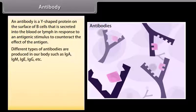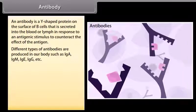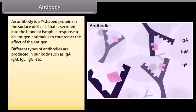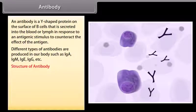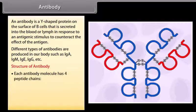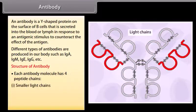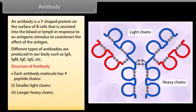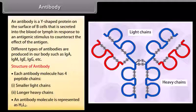Different types of antibodies are produced in our body, such as IgA, IgM, IgE, IgG, etc. Each antibody molecule has four peptide chains: smaller light chains and longer heavy chains. An antibody molecule is represented as H2L2.